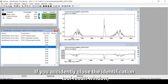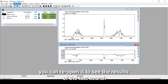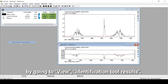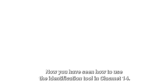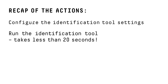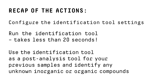If you accidentally close the identification tool result window, you can reopen it to see the results of the last search by going to View and then Identification Tool Results. As a recap, once you have configured your settings you can run the identification tool search in less than a minute by clicking Tools and Identification Tool, so you can quickly identify unknown compounds even when you are in a hurry in the field. You can also use the identification tool later as a post-analysis tool — you just need the sample spectrum of the sample you want to analyze.